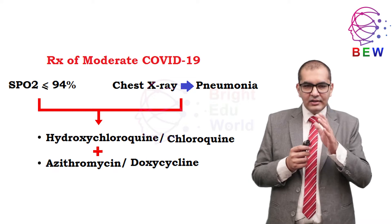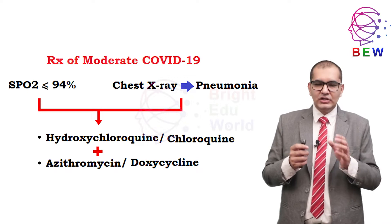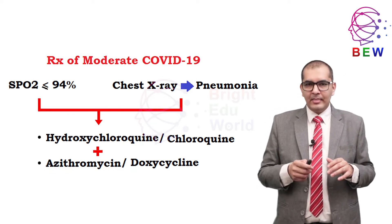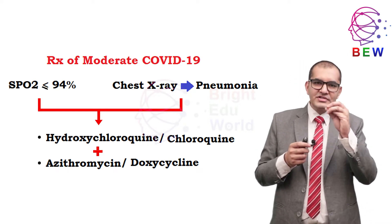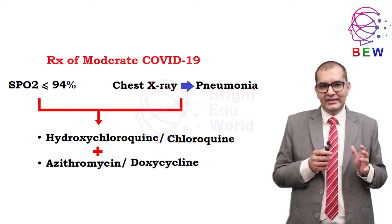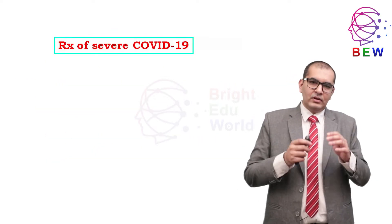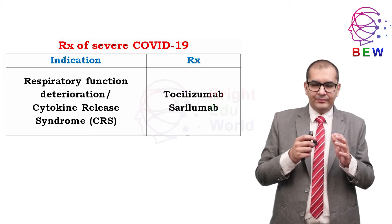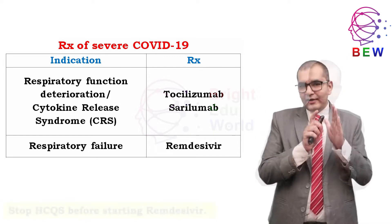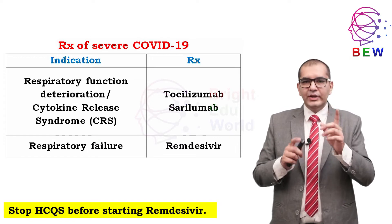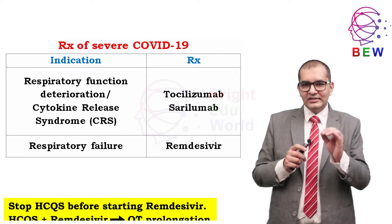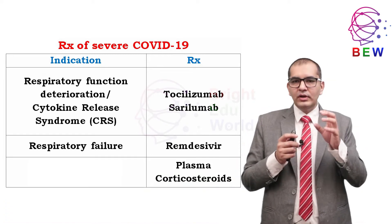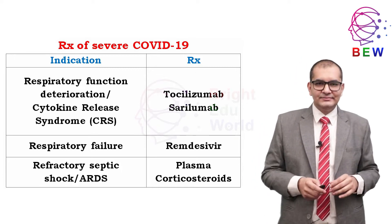Doxycycline may be considered as an alternative for patients who demonstrate hypersensitivity to azithromycin. Over time, few of these drugs are no longer currently used, as there is continuous change in policies related to COVID-19 drugs. For severe disease, worsening respiratory function with CRS leads to tocilizumab or sarilumab. For respiratory failure, remdesivir is used. Hydroxychloroquine must be discontinued prior to remdesivir due to the risk of QT prolongation. Plasma and corticosteroids are options, but corticosteroids are only for refractory septic shock or ARDS.